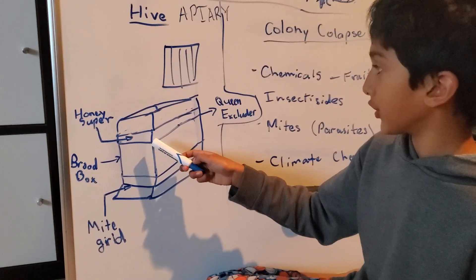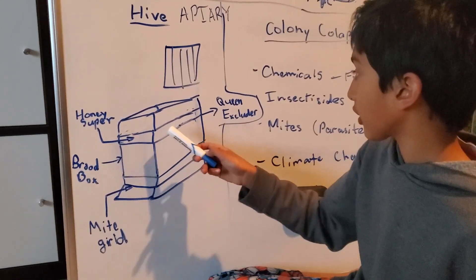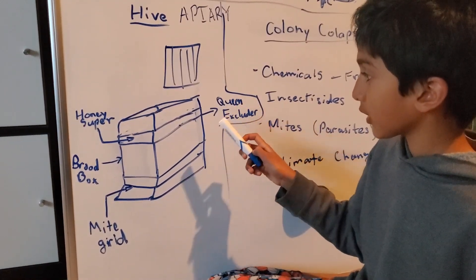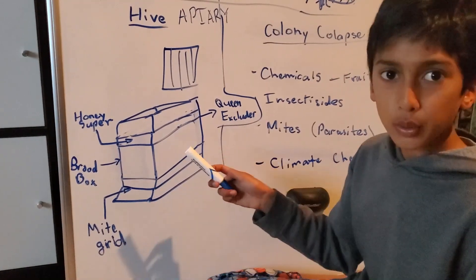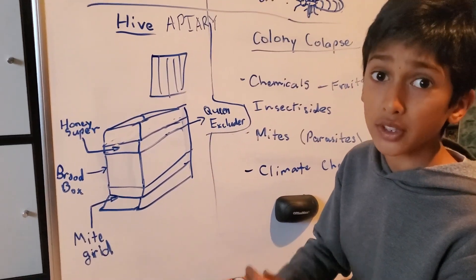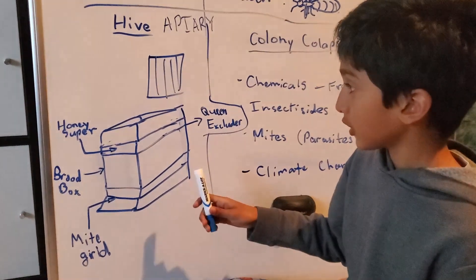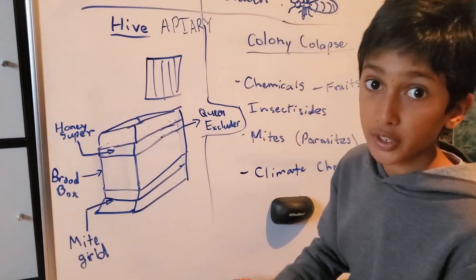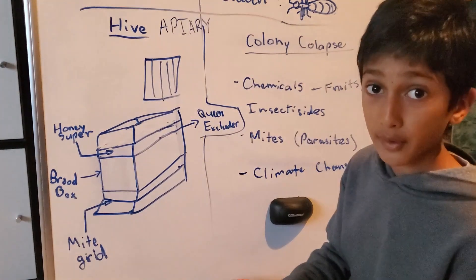Right above that is a metal grill called the queen excluder. The queen excluder is very thin and doesn't let the queen go through it, but the drone and the worker bees can go through the grill whenever they want.